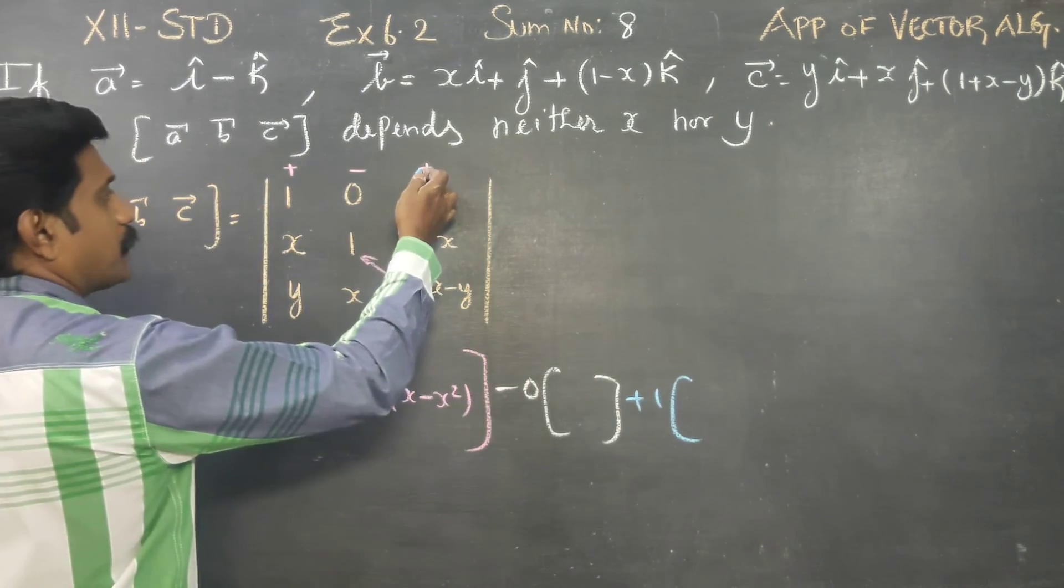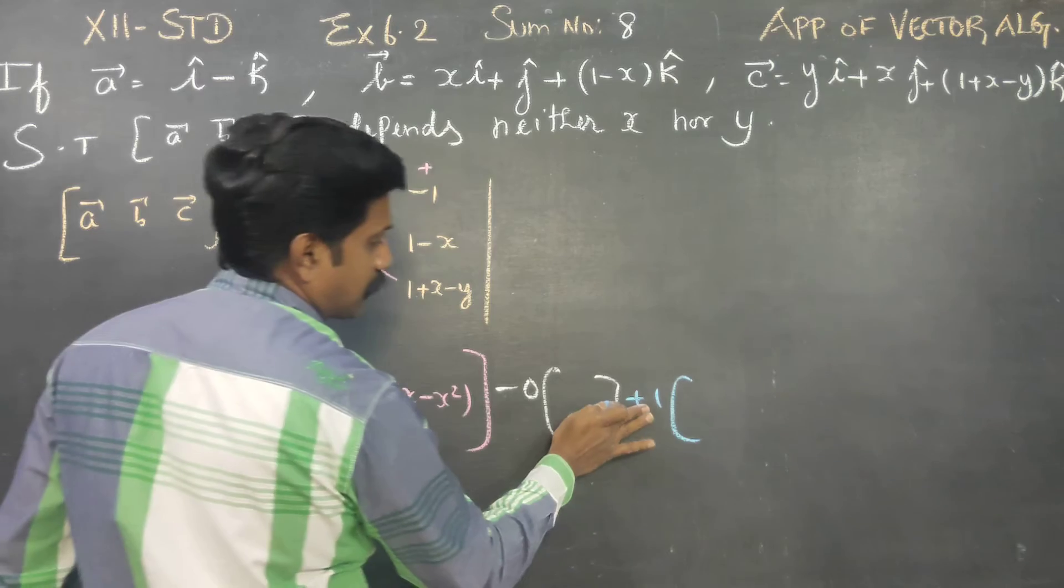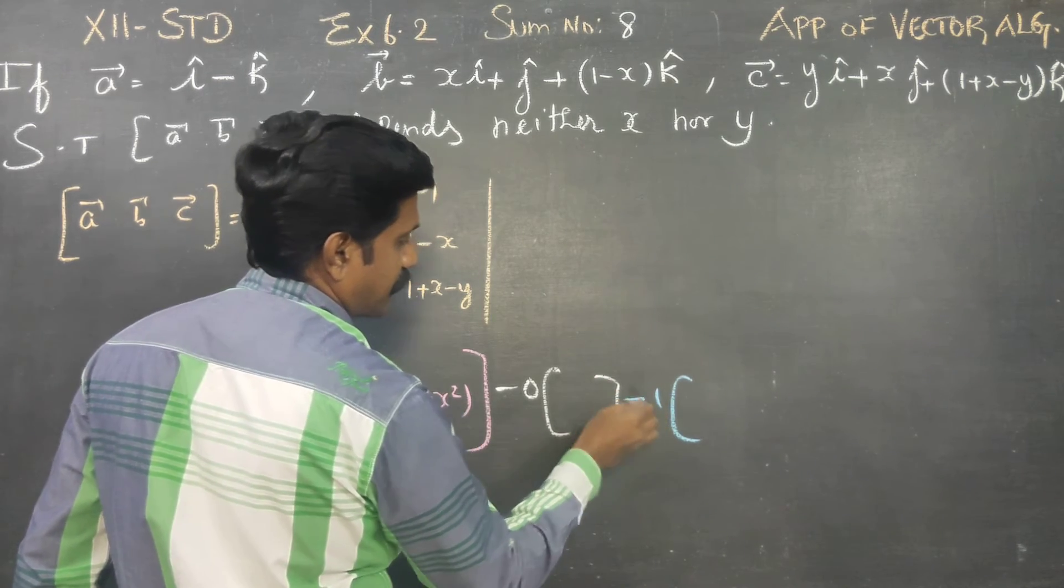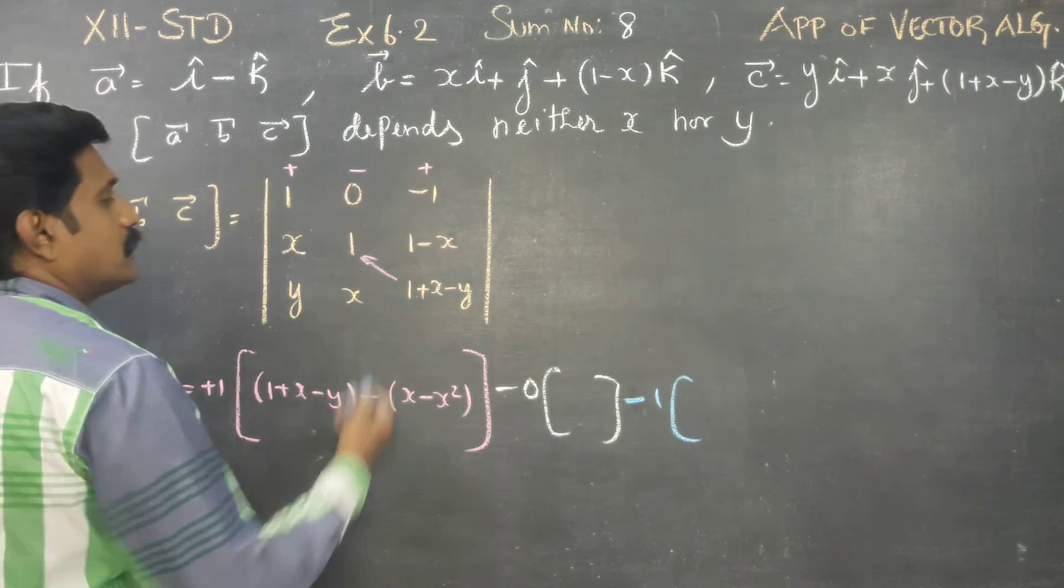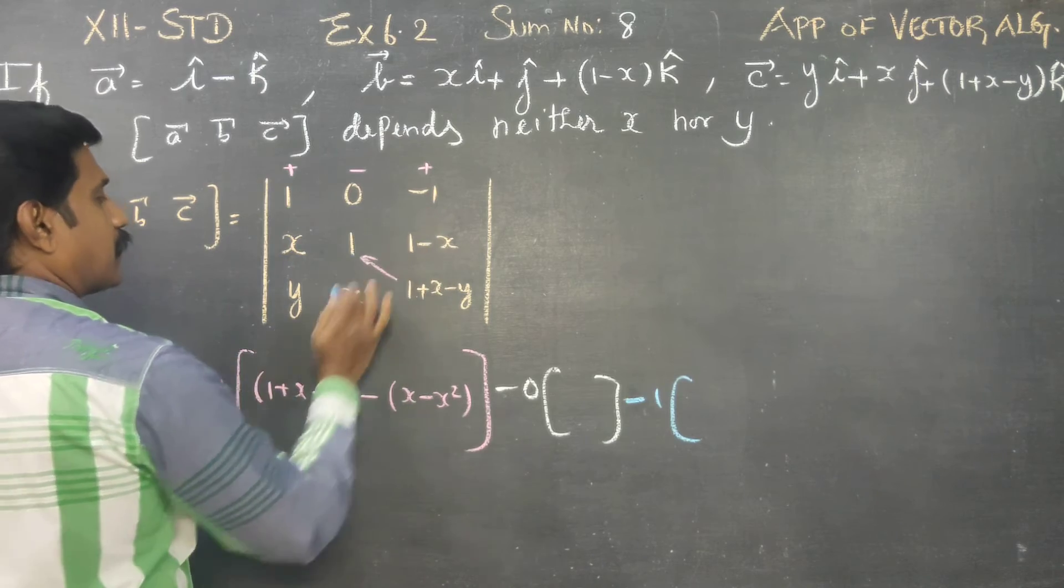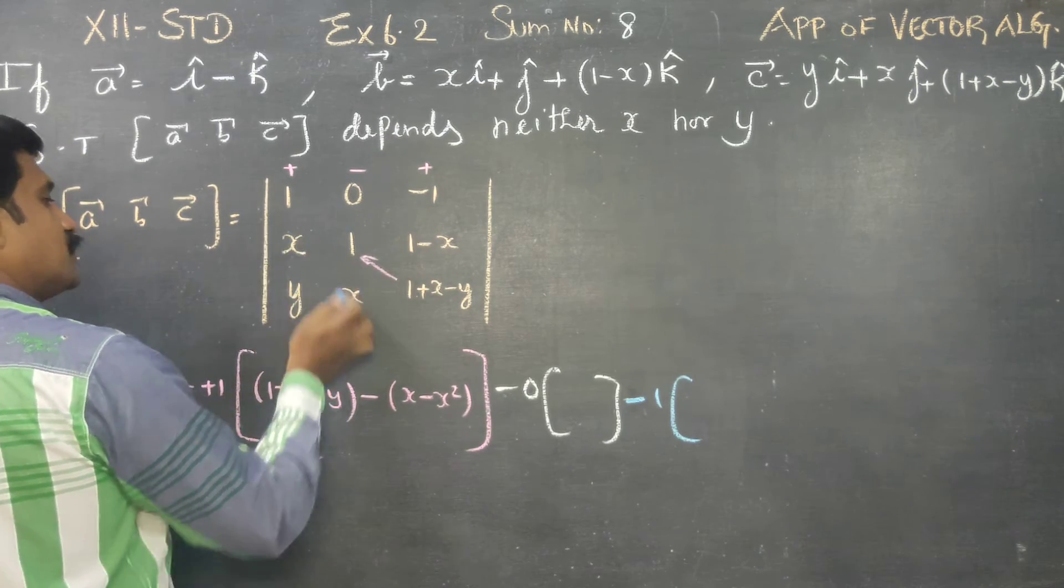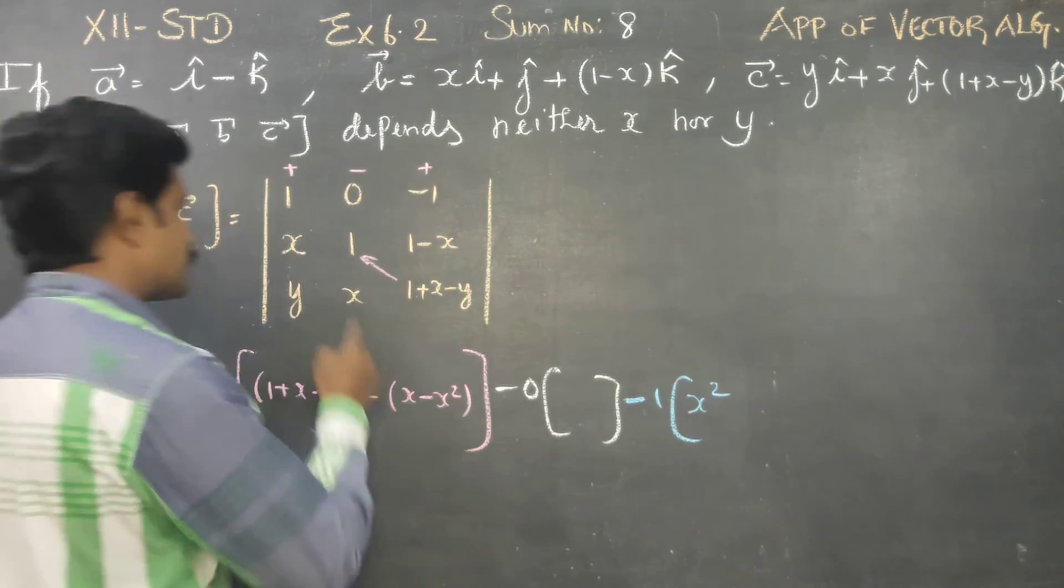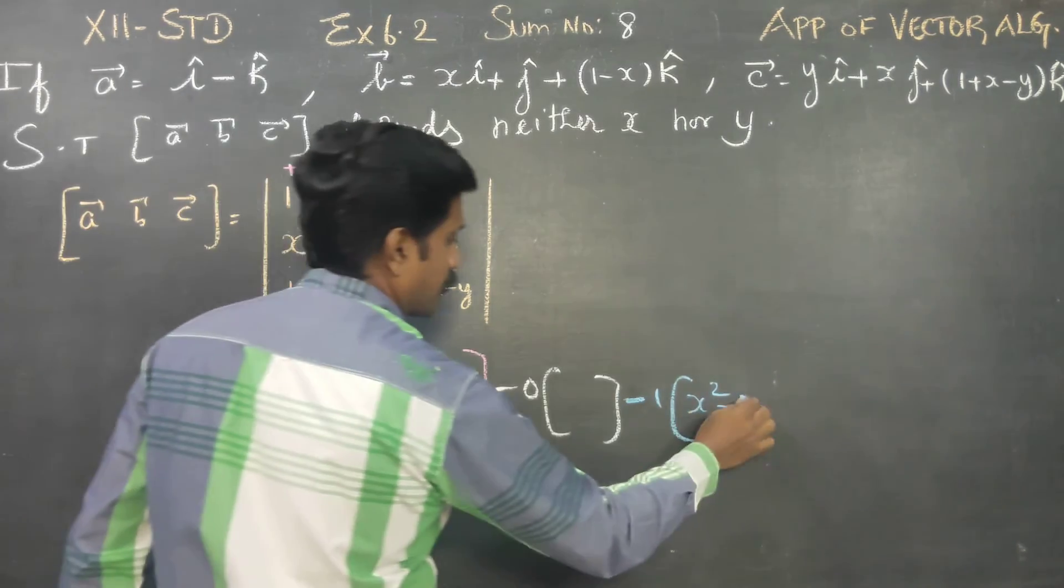Minus 1 into this. You will be getting minus 1. Minus 1 into this becomes minus x square minus y.